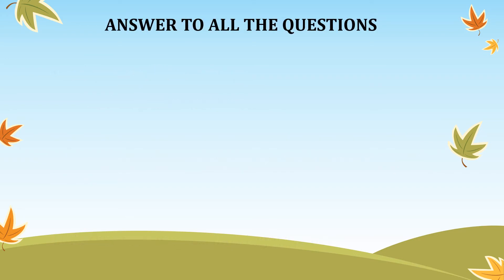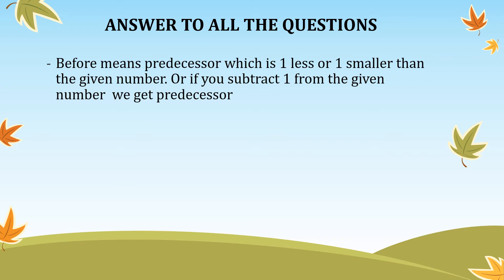Before means predecessor, which is one less or one smaller than the given number. Or, if you subtract one from the given number, we get the predecessor. So predecessor means the number that is one less or one smaller than the given number.